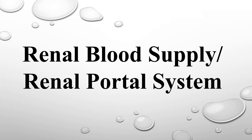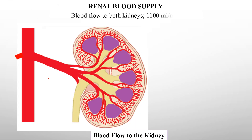Let's study the renal blood supply. Both kidneys normally receive almost 1100 ml of blood per minute. Blood flows into the aorta, which gives rise to the right and the left renal artery to reach the right and the left kidney respectively.